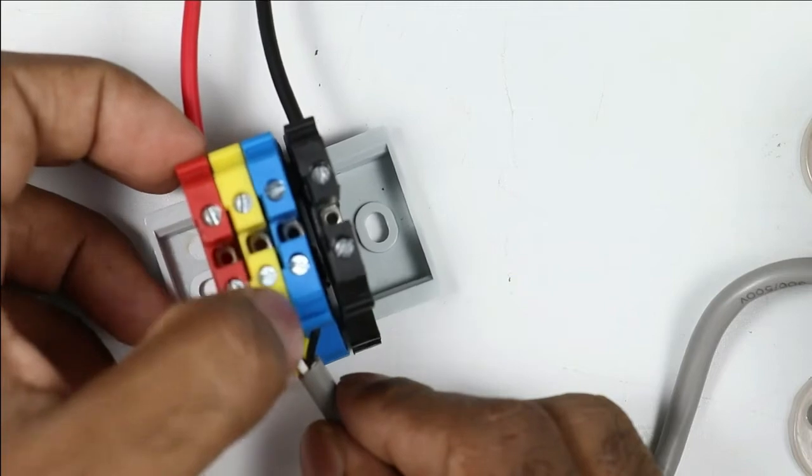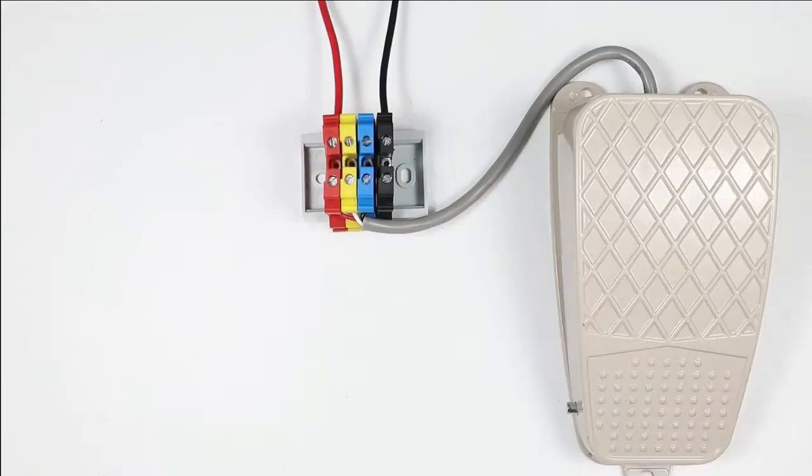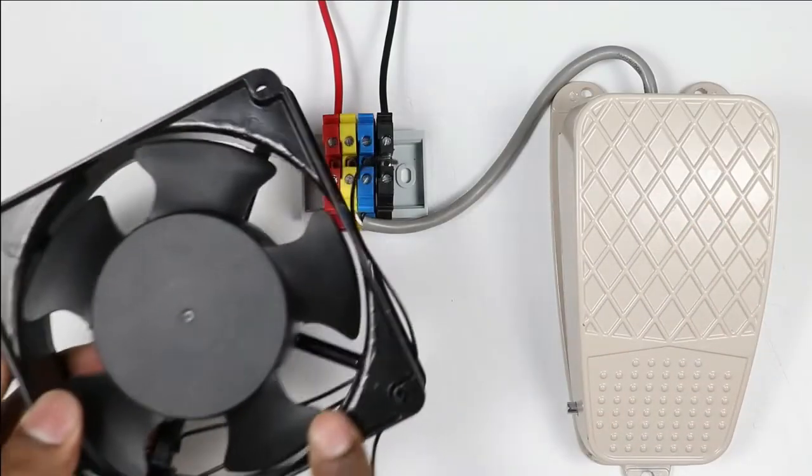On this terminal box, no wire is connected. This neutral wire is connected with this black terminal box. With the help of this switch, I want to operate this fan.